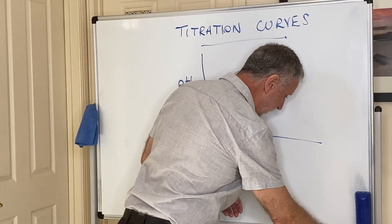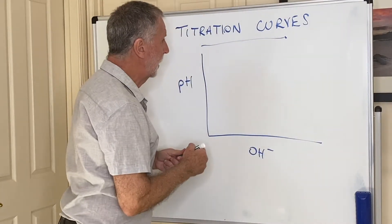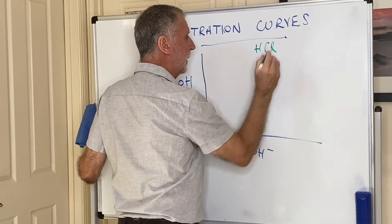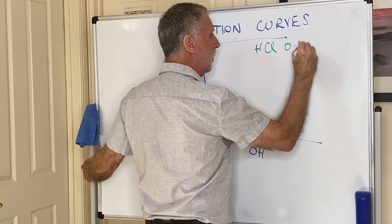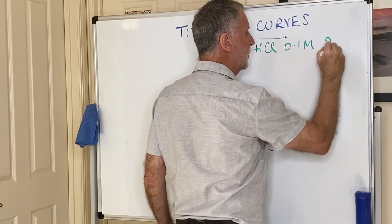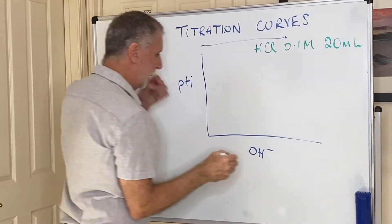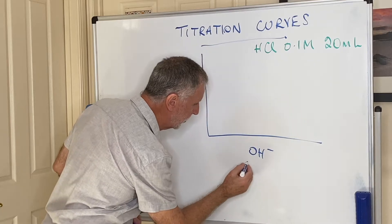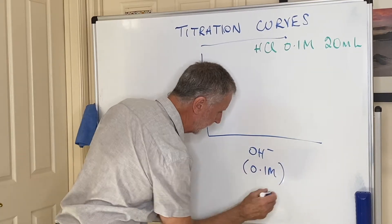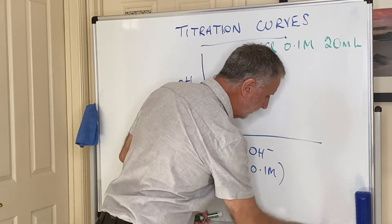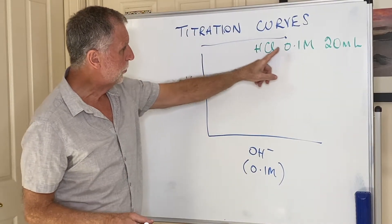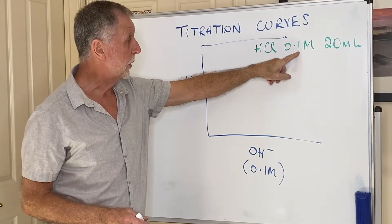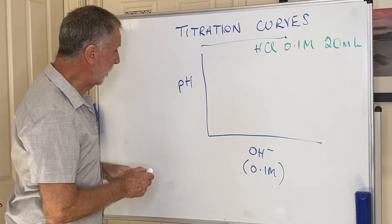Let's say we are starting with some hydrochloric acid, HCl, in our conical flask. It has a concentration of 0.1 mol/L and we're using 20 mL of it. The alkali — the OH⁻ — is also the same concentration, 0.1 mol/L. For a 0.1 mol/L solution of HCl, the pH would be 1.